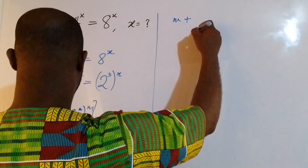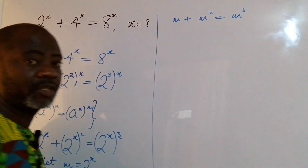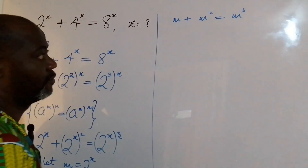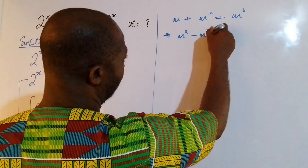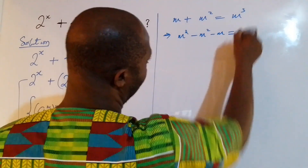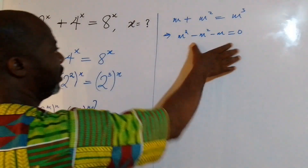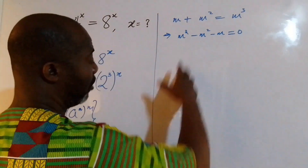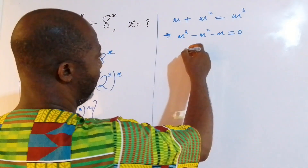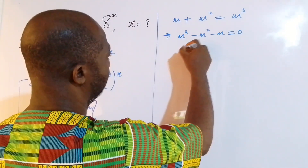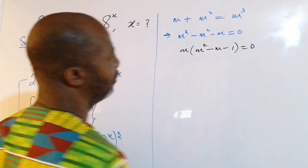Using that substitution, the equation becomes m plus m squared equal to m cubed. From here I can rewrite this as m cubed minus m squared minus m equal to 0. This is a cubic equation, and we can see that m is common to all terms, so I factorize: m times the quantity m squared minus m minus 1, equal to 0.